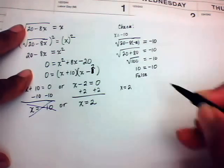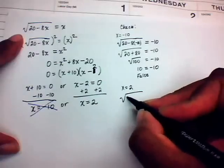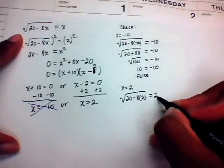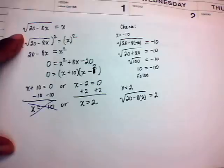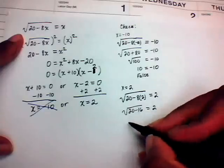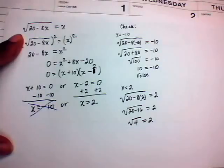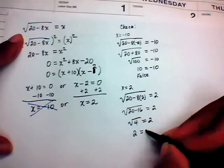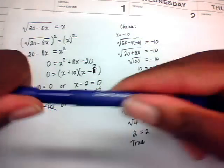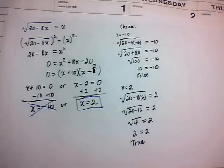Checking x = 2: √(20 − 8(2)) = √(20 − 16) = √4 = 2, which does equal 2. That's a true statement. Therefore, x = 2 is the only solution to this radical equation.